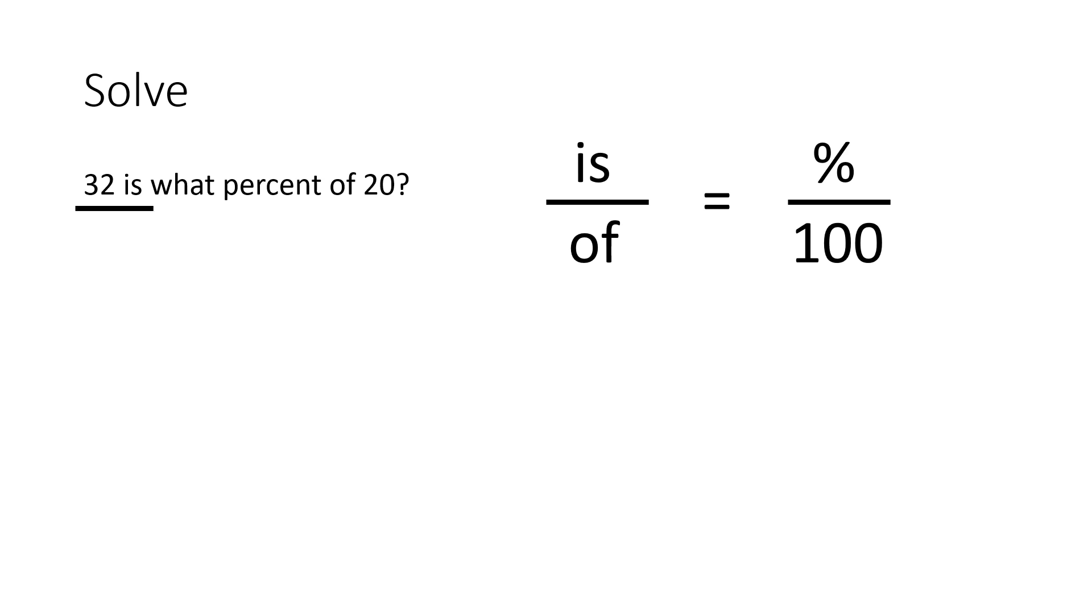Let's look at the number 32. Where would it go on this formula? Since we are reading '32 is,' that means we are replacing the word is on this formula with 32. Next, they want to know what percent. We do not know this yet, so where we see the percent on the formula, we will write a variable and use the letter n.